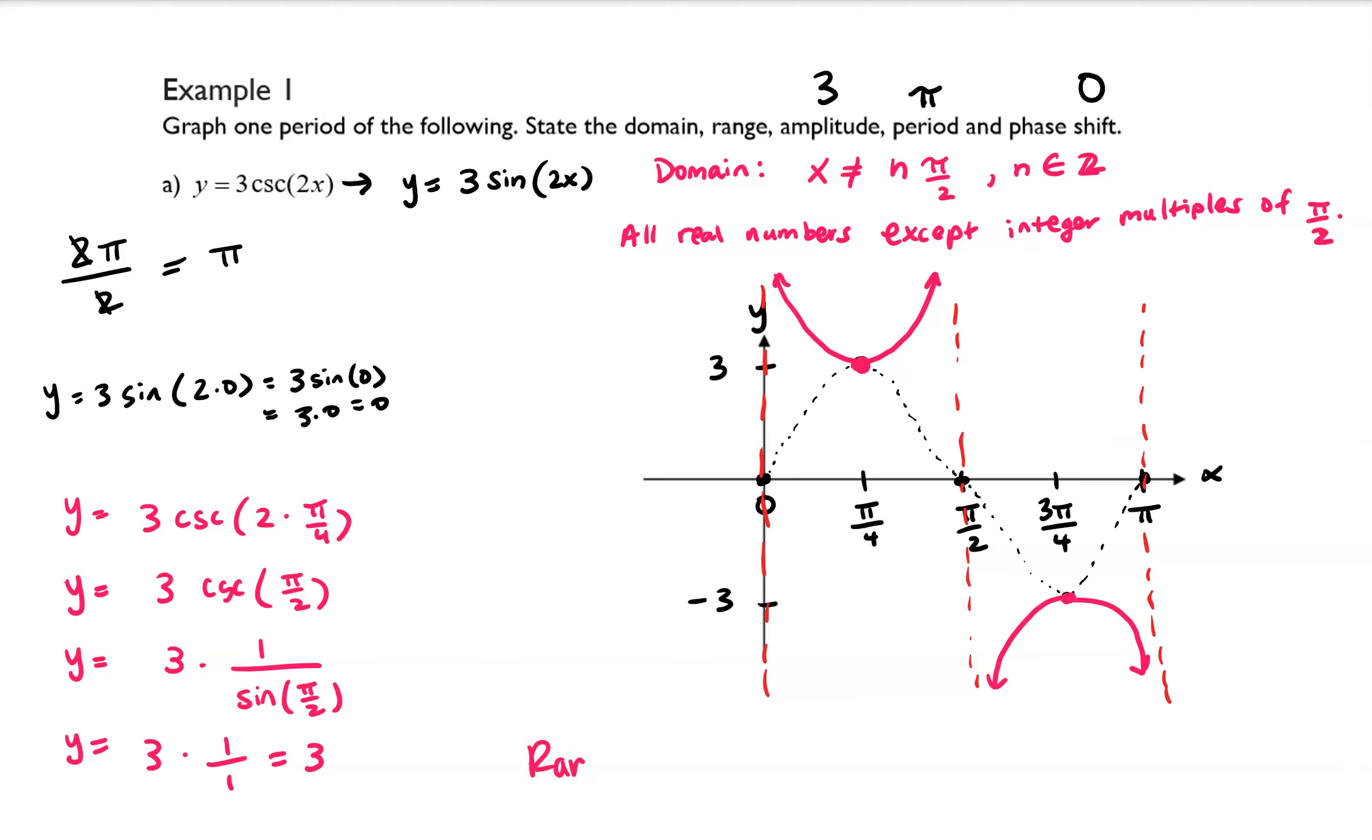And then the range, I'm running out of room, so I'm going to write it down here. The range is negative infinity to negative 3 bracket union bracket 3 comma infinity parentheses. So that is our range, this is our domain.